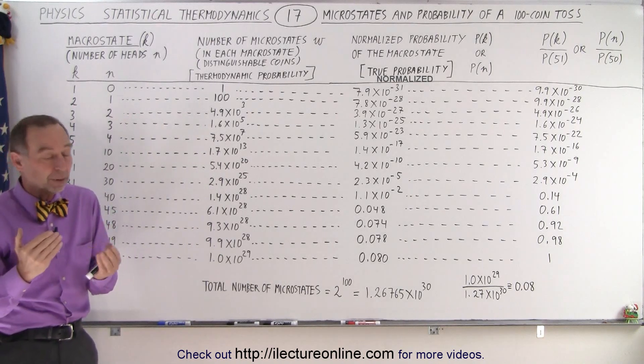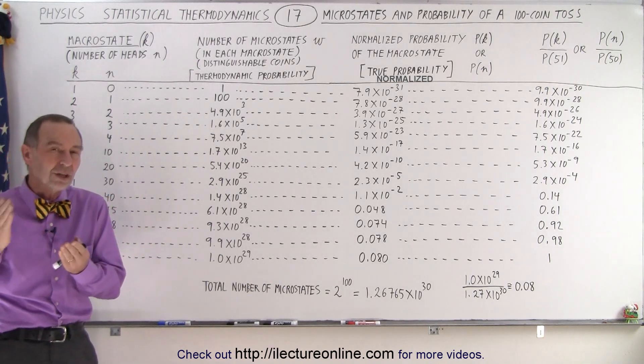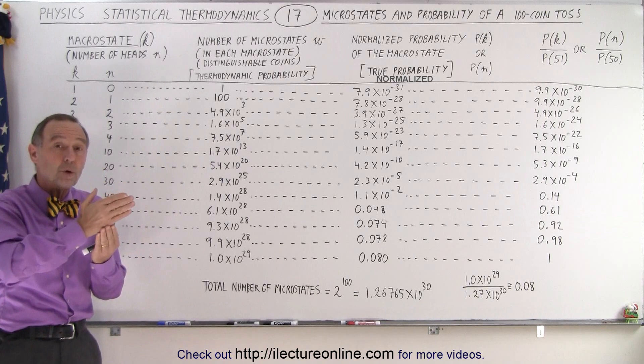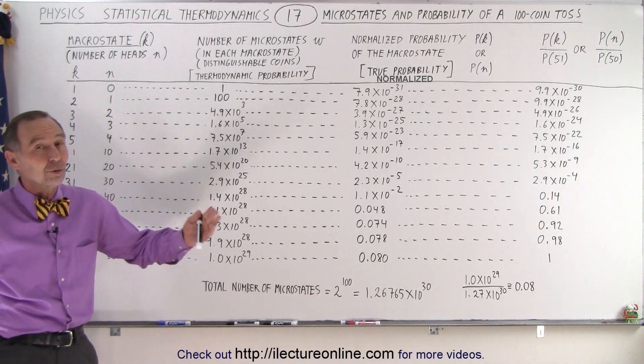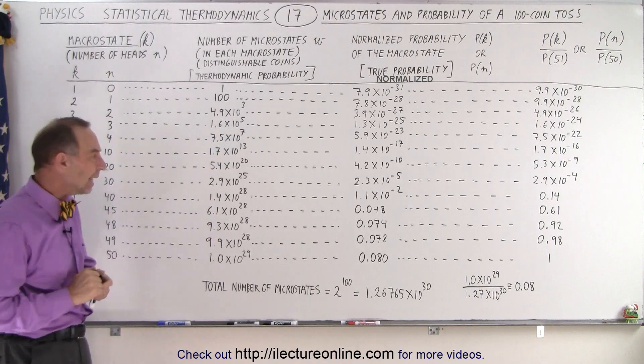No, the answer is there's a hundred possibilities because if the coins are distinguishable, each of the 100 coins can be heads and all the other ones tails. And you can go through all the 100 coins. There's a hundred ways in which that can happen.